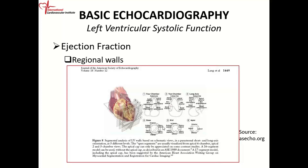That is how we look at the heart when we bread-loaf it in short axes. You can also bread-loaf the heart in a longitudinal plane. This gives you the apical four-chamber view. In this view, you can see the anterior lateral wall on one side and the inferior septum on the other side. The uppermost portion we call the apical cap.